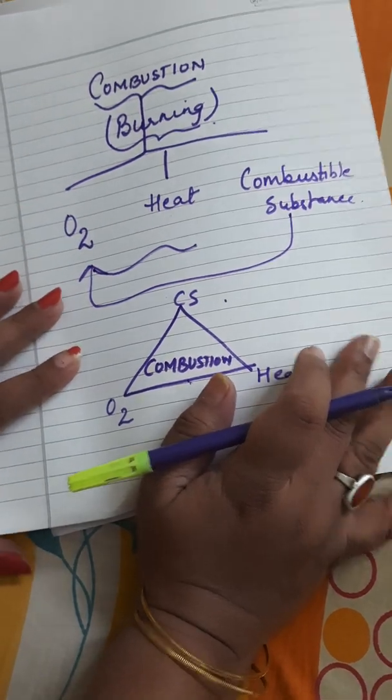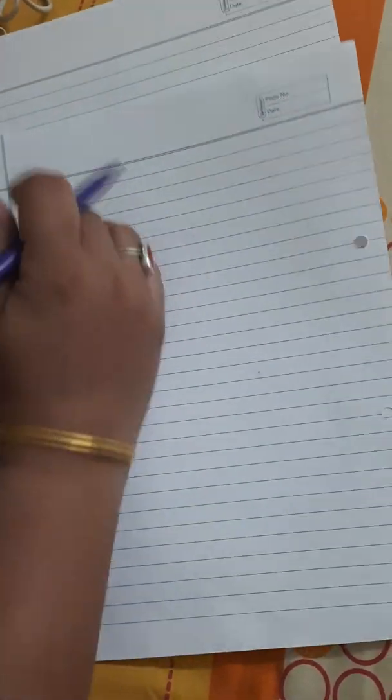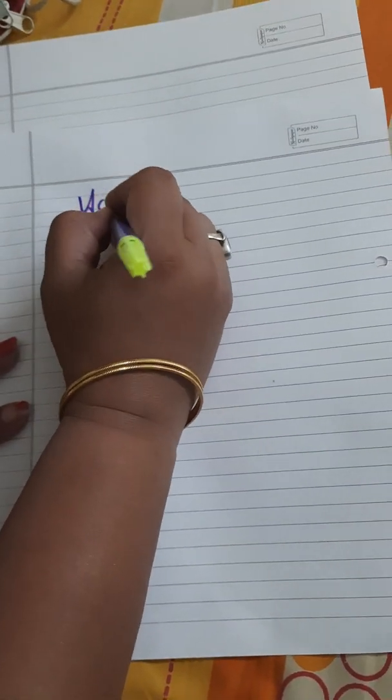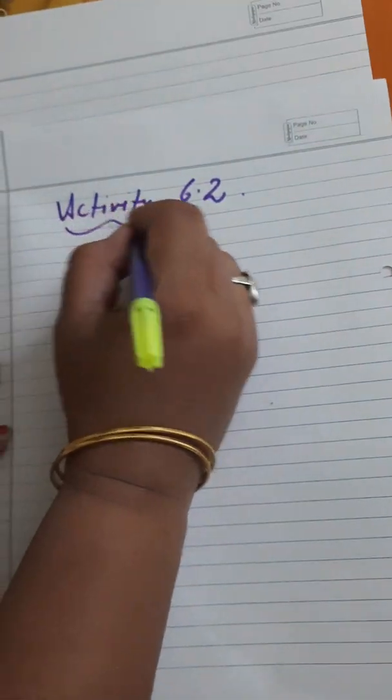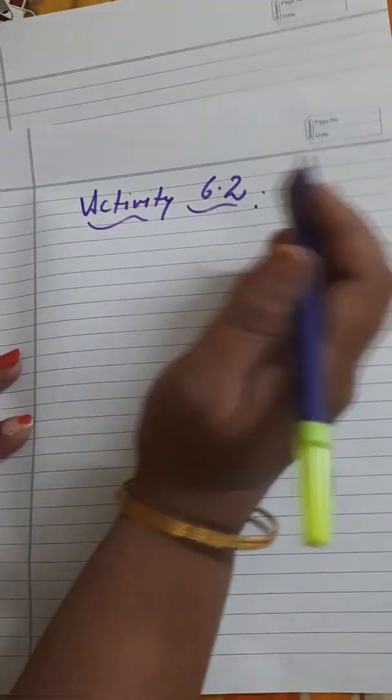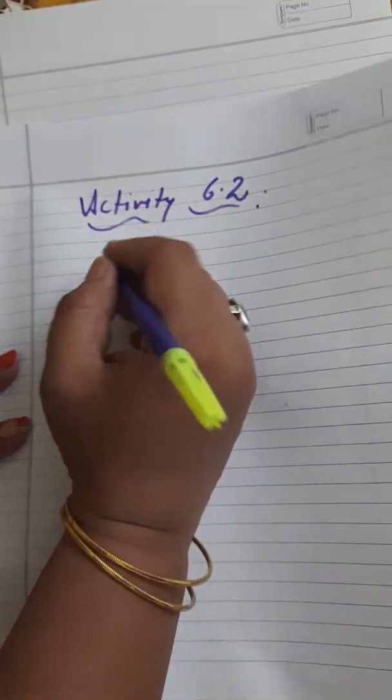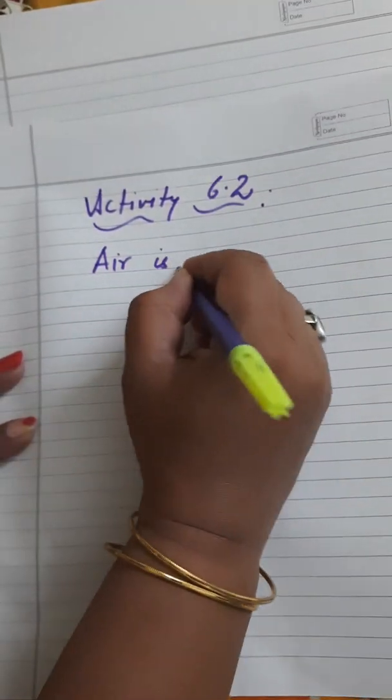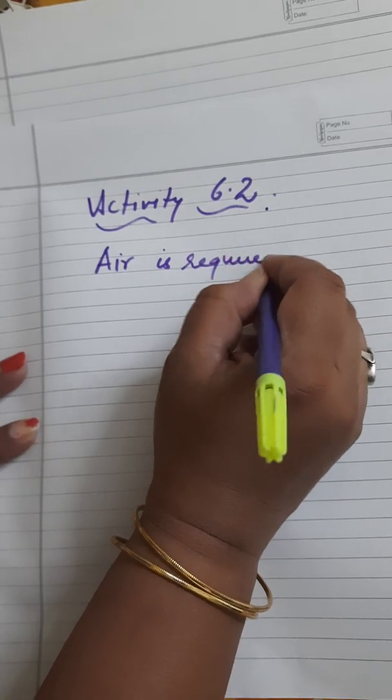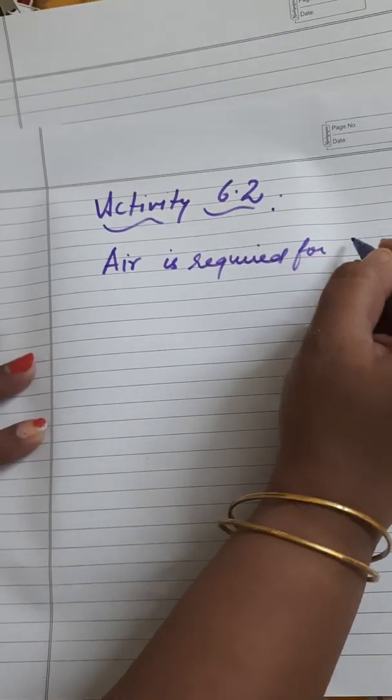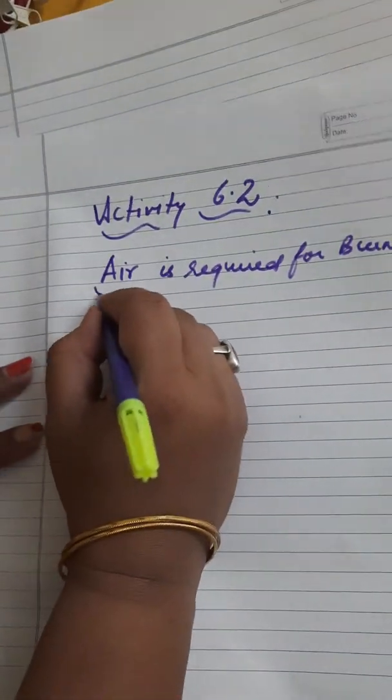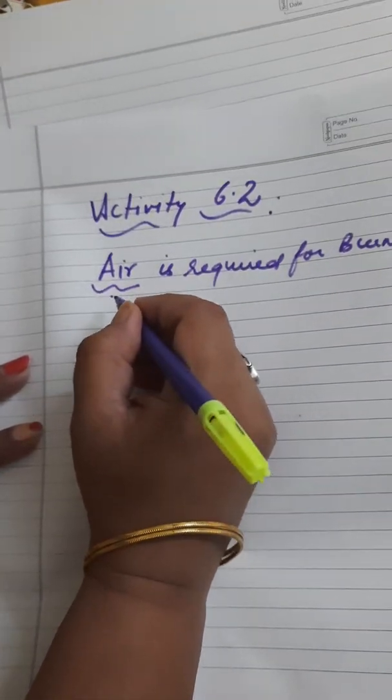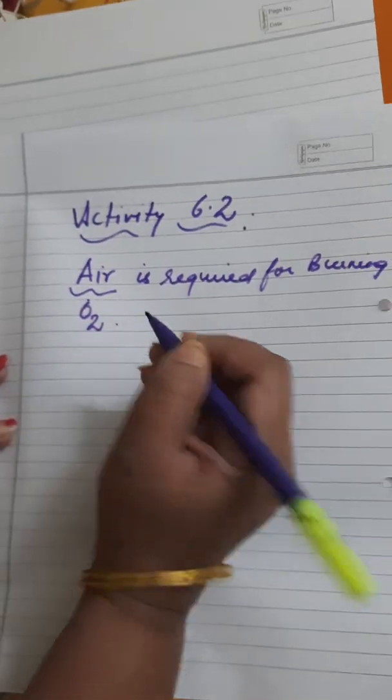To understand more children, there is an activity given in your NCERT book, activity 6.2. In this activity, the basic aim is to make you understand that air is required for burning. When I say air is required for burning, here air specifically means oxygen.